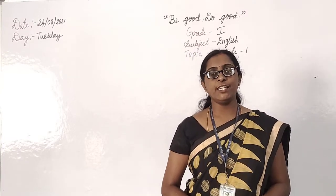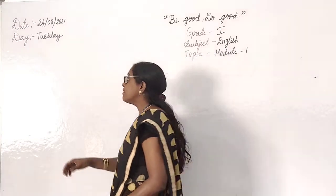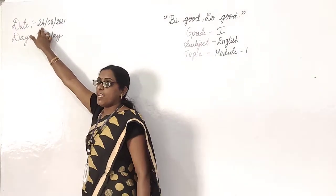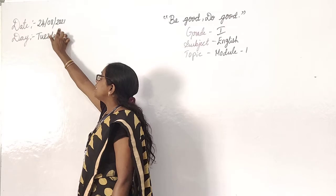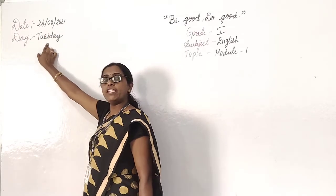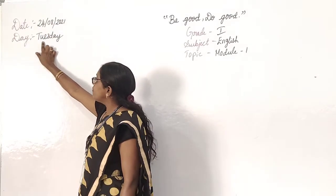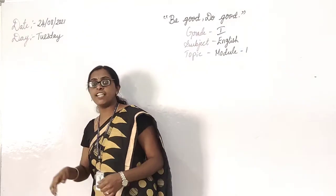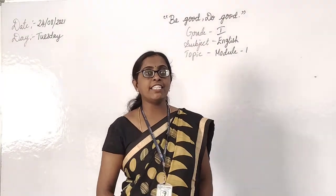Tell me, what is the day today? Today the day is 24. We are in the month of August. Today is Tuesday.